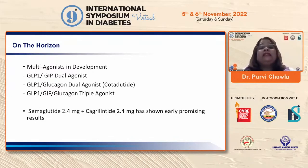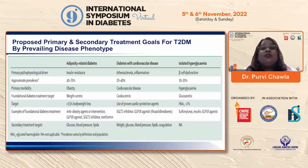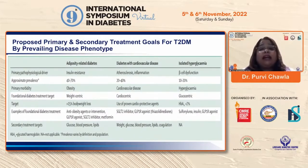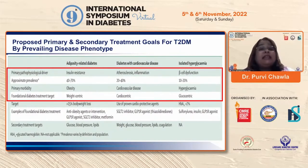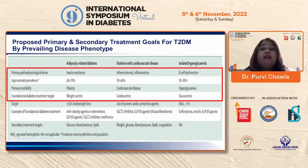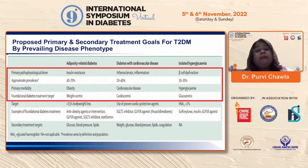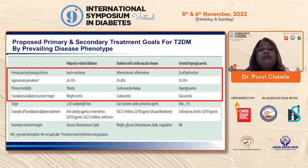Looking at phenotype-based classification, adipose-related diabetes as opposed to cardiovascular disease-related or isolated hyperglycemia represents a different approach to viewing diabetes. We can see that 40 to 70 percent of our patients would benefit from a weight-centric approach to managing diabetes, and even those with cardiovascular disease will largely benefit from a combined glucose and weight-centric approach.